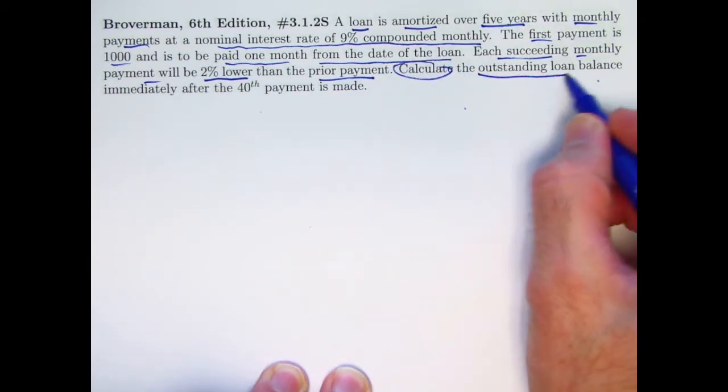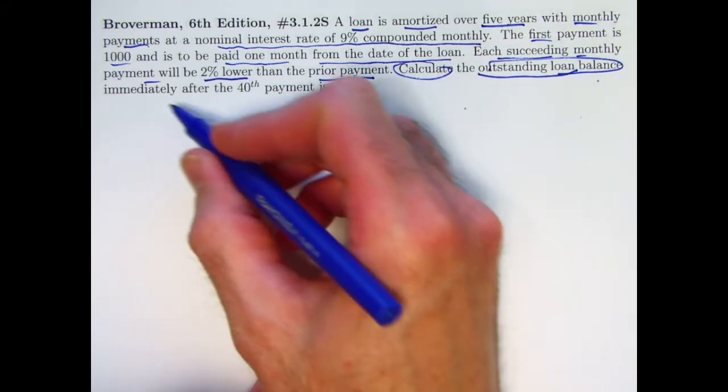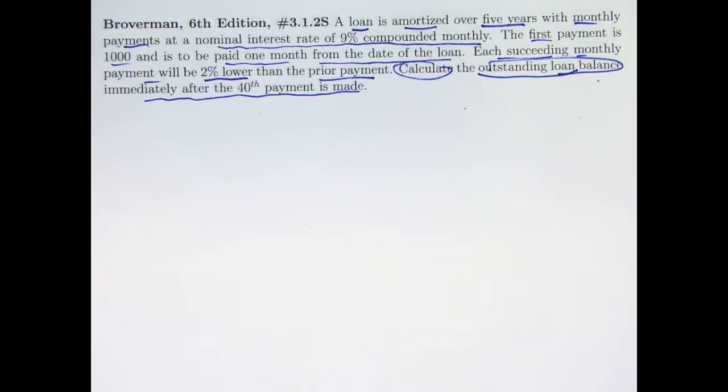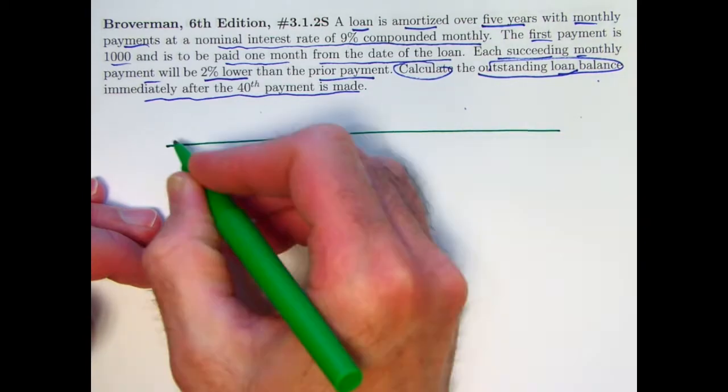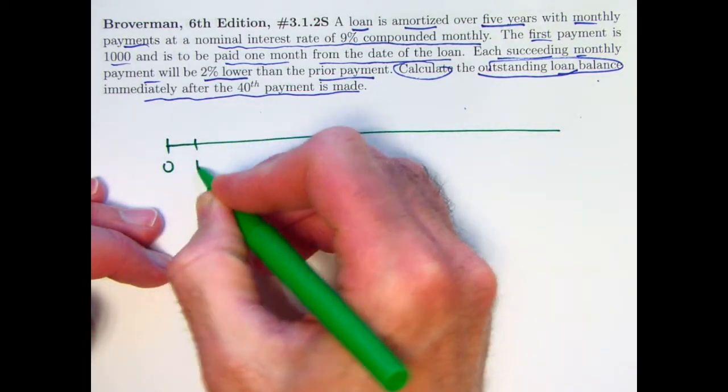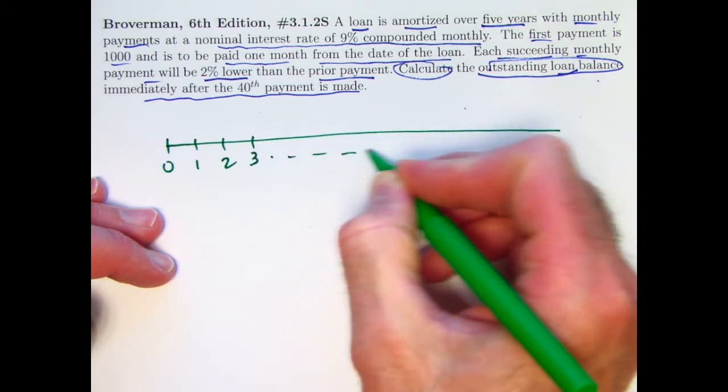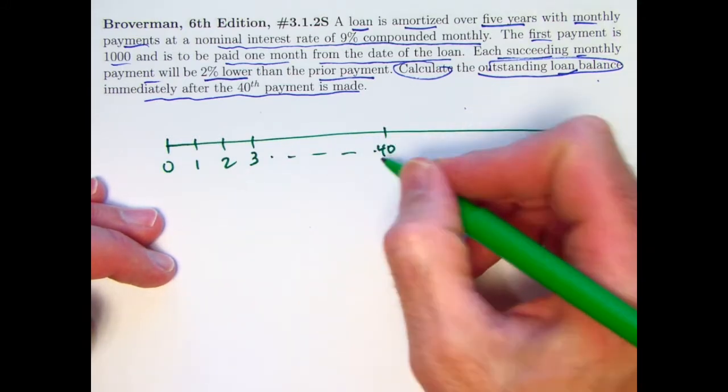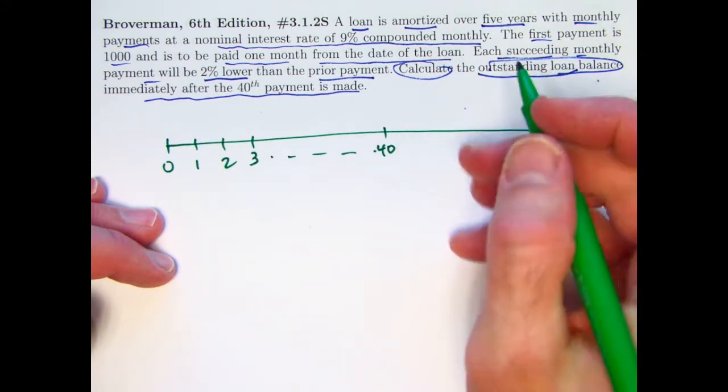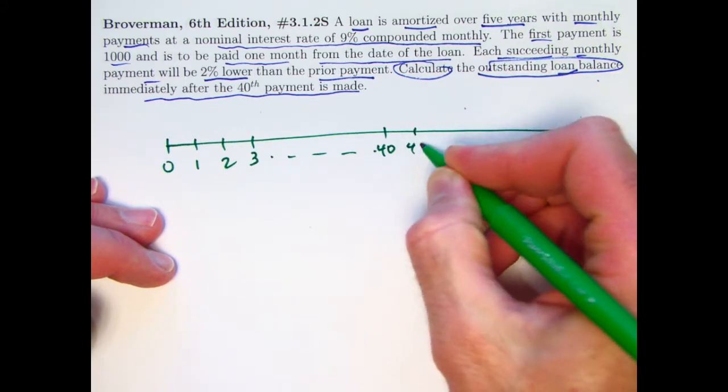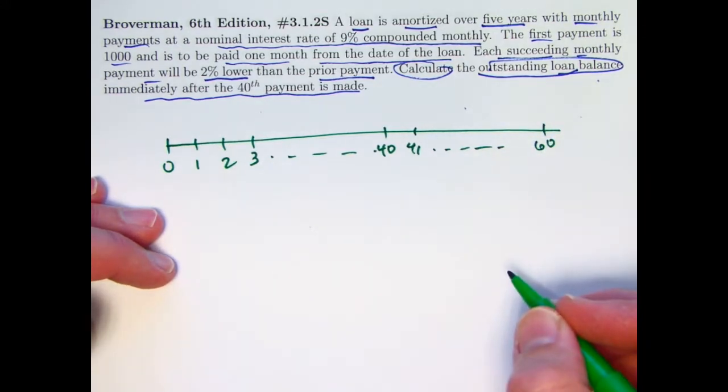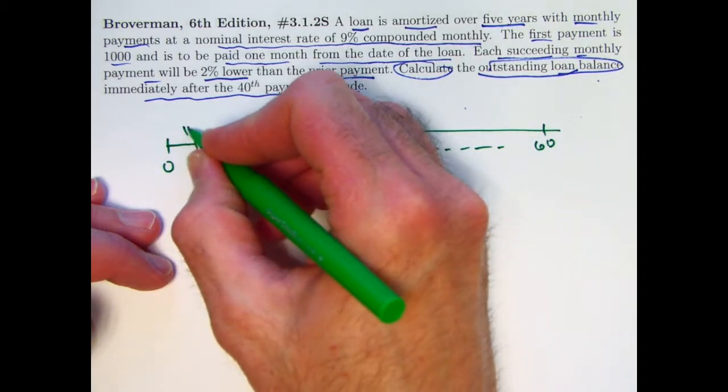Calculate the outstanding loan balance immediately after the 40th payment is made. All right, so let's draw our number line. We'll think of time as being in months. We want to find the outstanding balance at time 40 immediately after that 40th payment. There are 60 months in five years, so we'll end at time 60.